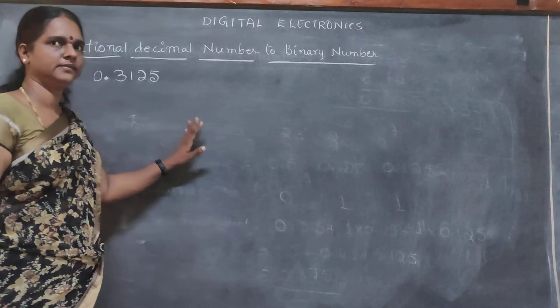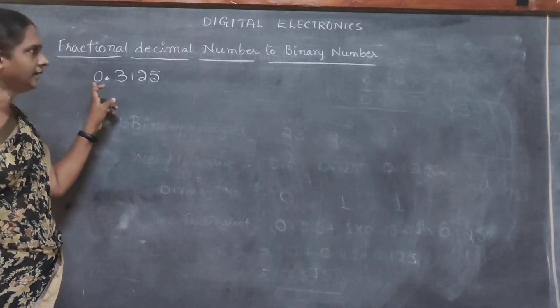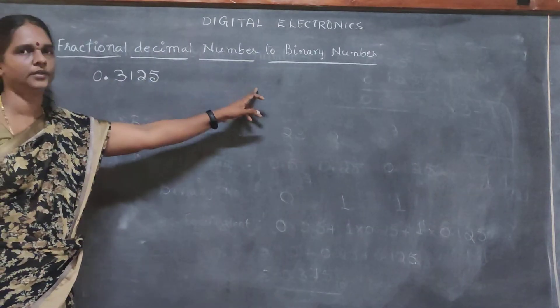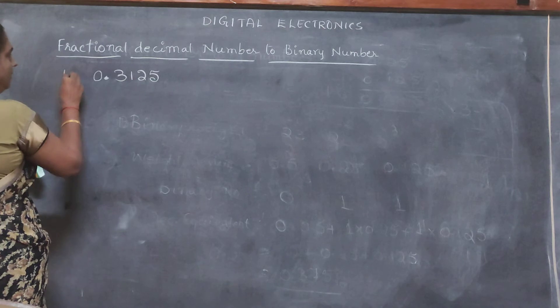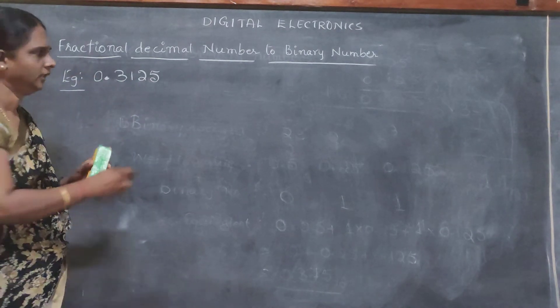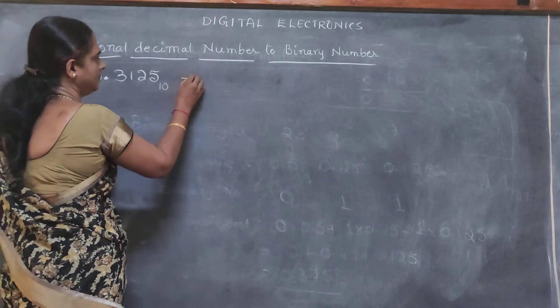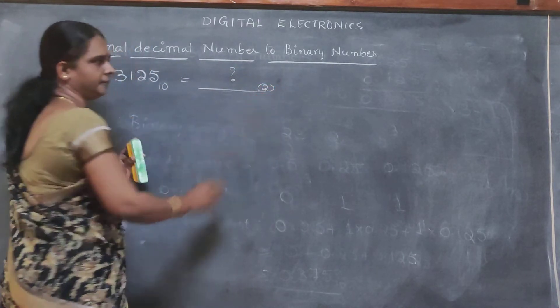So, in this video, let us understand how to convert fractional decimal number to binary number. For that, let us take an example 0.3125. This fractional decimal number needs to be converted to binary number.